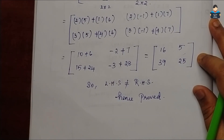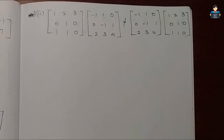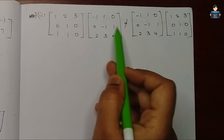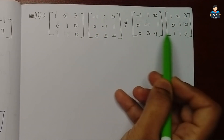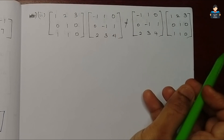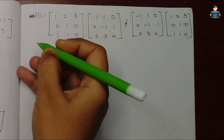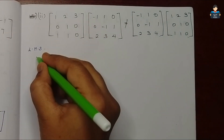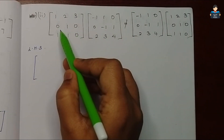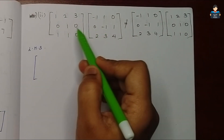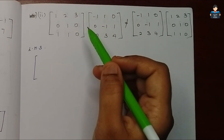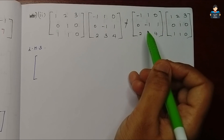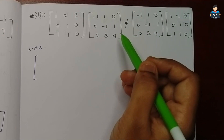Now, second subdivision. Again we need to prove LHS is not equal to RHS. First, the LHS part. Here we have a 3×3 matrix, so the final answer will also be a 3×3 matrix.